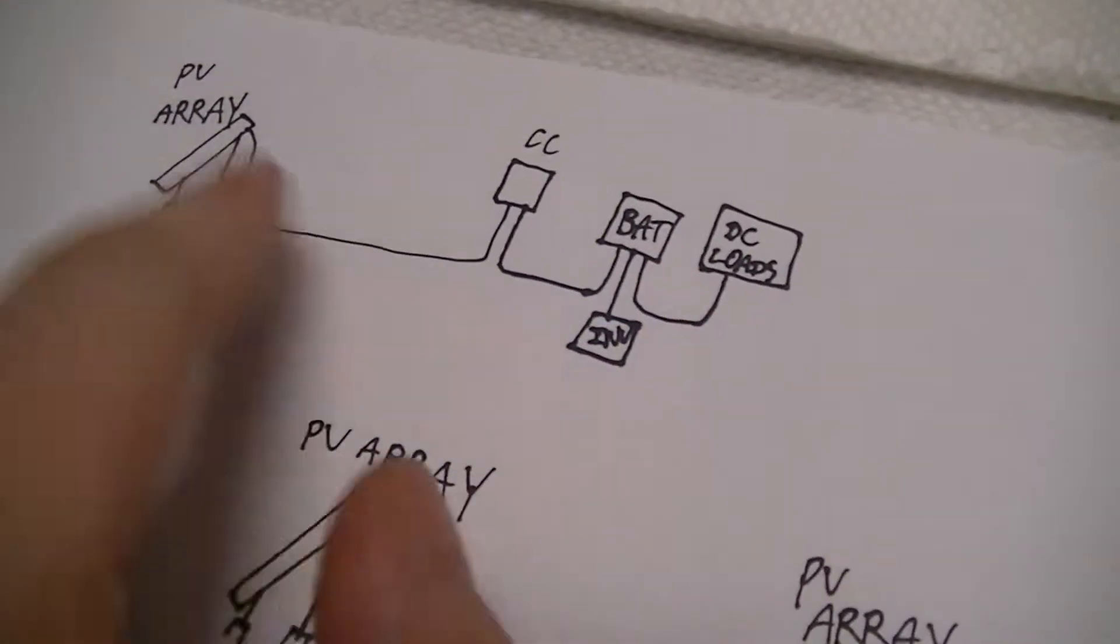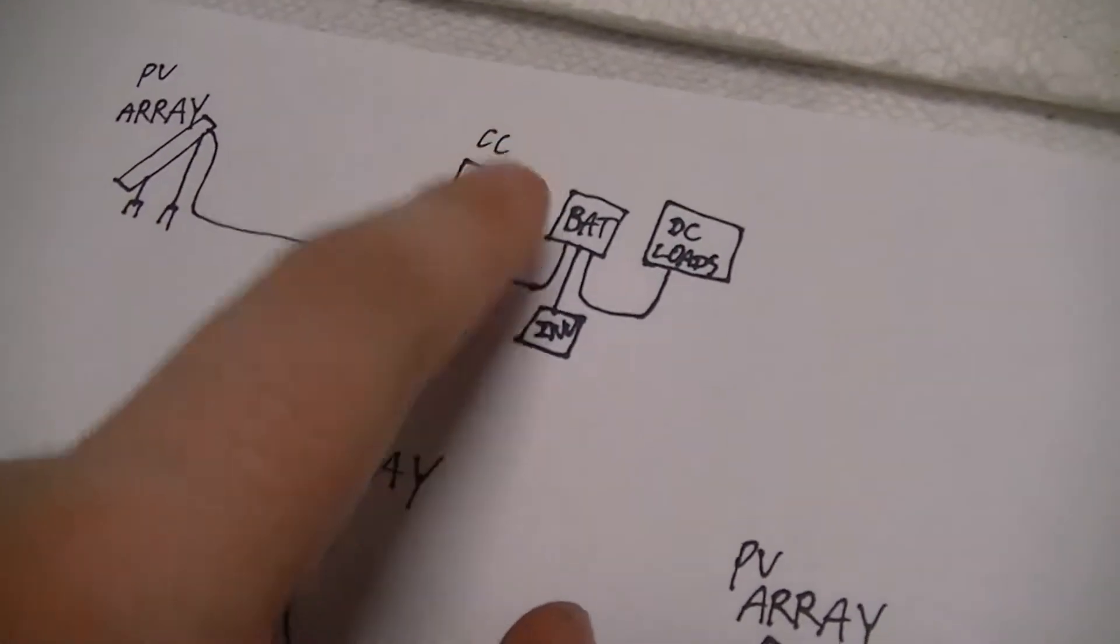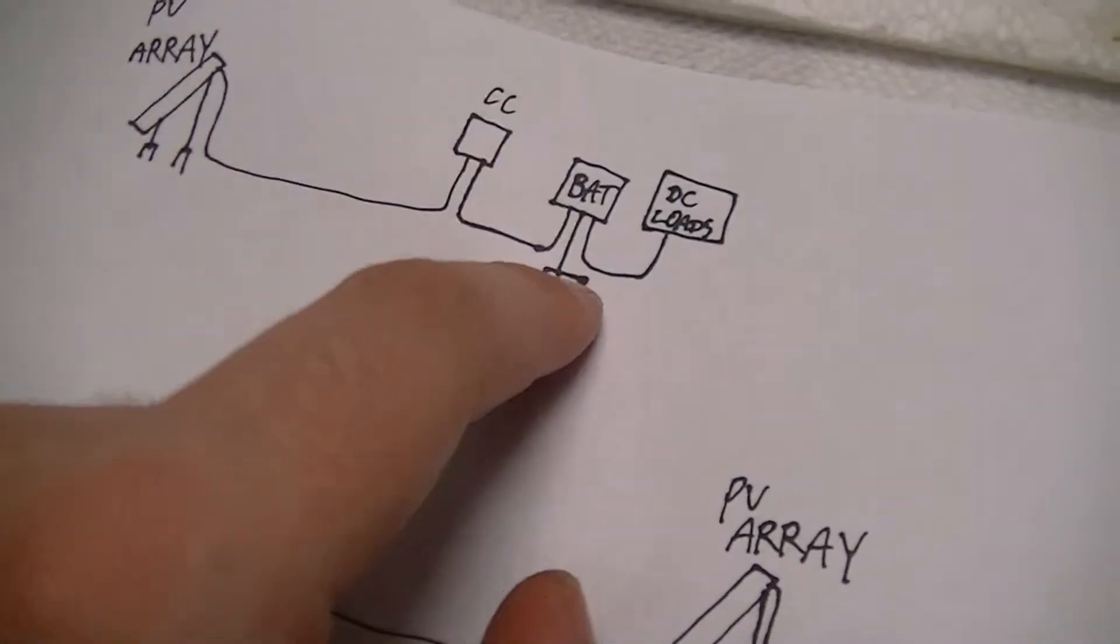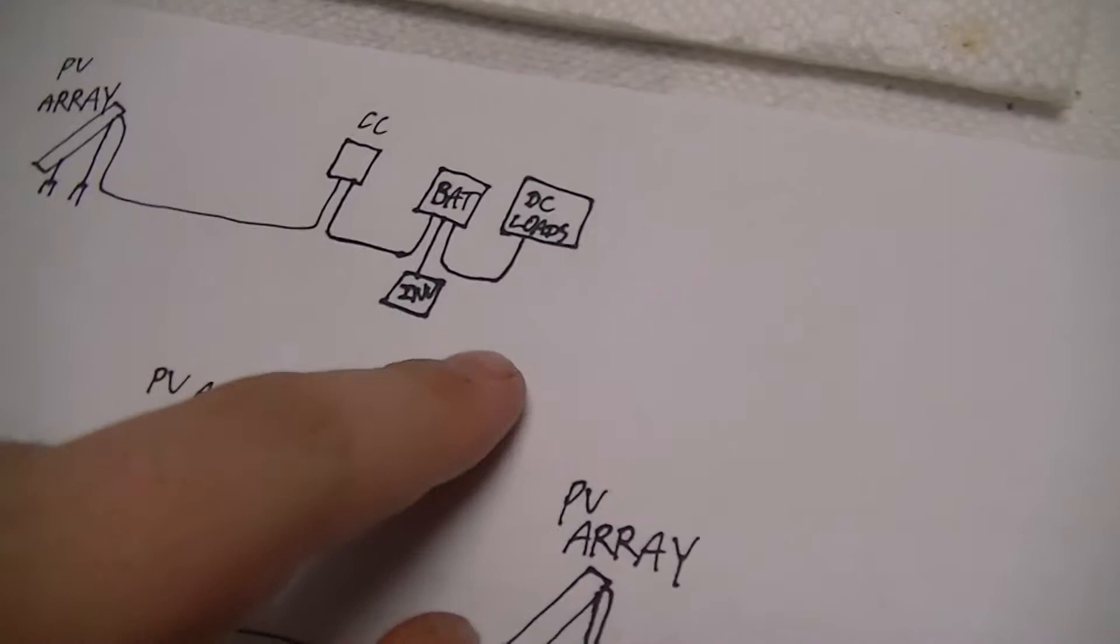Basically, in the case of a simple system like this, just a photovoltaic array, charge controller, battery bank, and inverter and loads. Sometimes one or the other, the inverter or the loads, aren't necessary depending on the type of system.